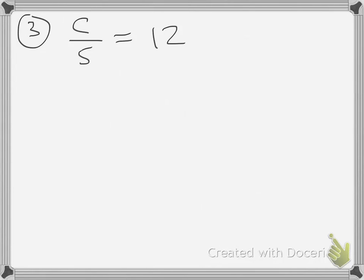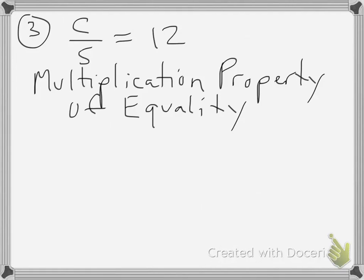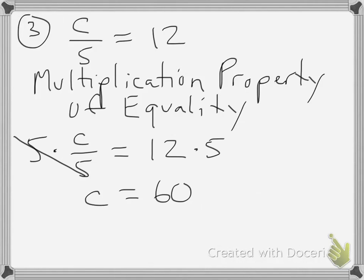Let's take a look at our third example. I have the equation c divided by 5 is equal to 12. This equation would be an example of the multiplication property of equality because I am performing the same operation — multiplication — on both sides of the equation in order to isolate the variable. When I multiply both sides by 5, I can see that c is equal to 60. So that is an example of how to use the multiplication property of equality.